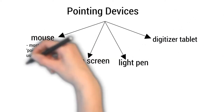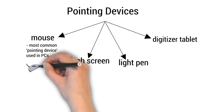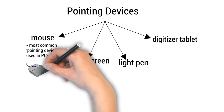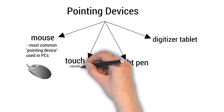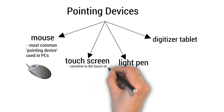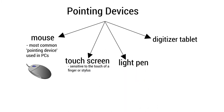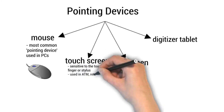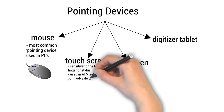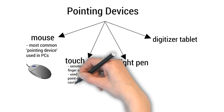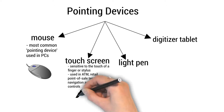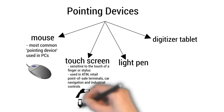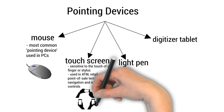The mouse is the most common pointing device used in PCs. A touchscreen is sensitive to the touch of a finger or stylus, and is used in ATMs, retail point-of-sale terminals, car navigation, and industrial controls.